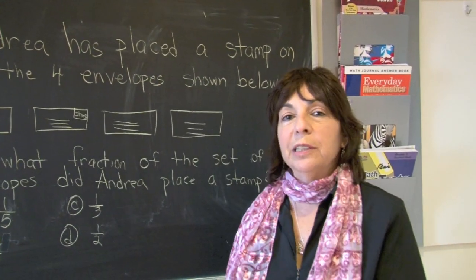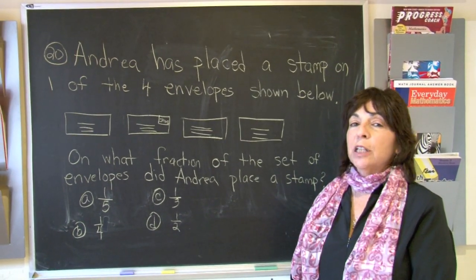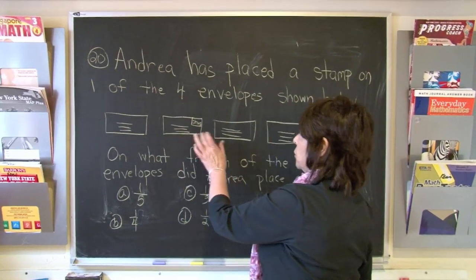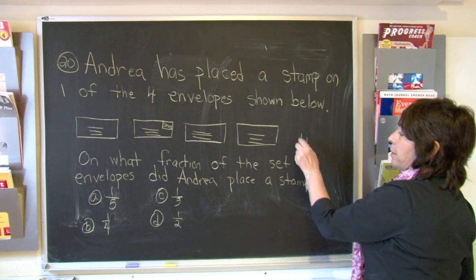When we are doing fractions, the first thing we need to do is count up the total number of items. So let's count the envelopes: one, two, three, four. That will be my denominator, the bottom number.